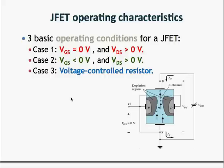There are three basic operating conditions for a JFET. In the first case, you keep the gate voltage at zero and apply a positive drain-to-source voltage. In the second case, you keep the drain-to-source voltage positive but apply a negative gate voltage. The third case is a condition where you can use the JFET as a voltage controlled resistor. We are going to be looking at these three basic operating conditions in the next few slides.